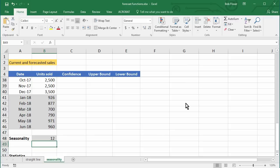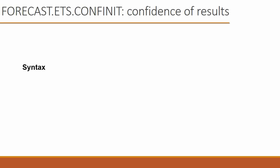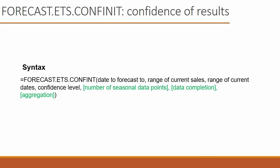Now that we have these numbers, how confident is Excel that they're correct? That's what the CONFINT function is for. The syntax is FORECAST.ETS.CONFINT with arguments for: the date to forecast to, the sales range, the date range, and an optional confidence level — which by default is 0.95, or 95%. If you know statistics, 95% roughly corresponds to four standard deviations, or four sigma.